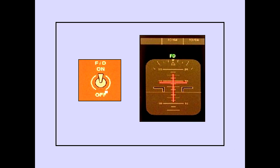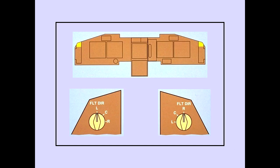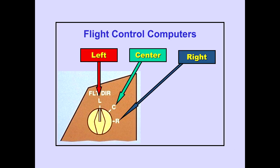There is an on/off switch for each pilot's flight director display. When either switch is selected on, the command bars and FD are displayed on the respective PFD. The flight director's source selectors are located on the pilot's panel for each pilot's flight director. The source selectors determine which flight control computer operates each pilot's flight director — the same three computers that provide inputs to the autopilots.